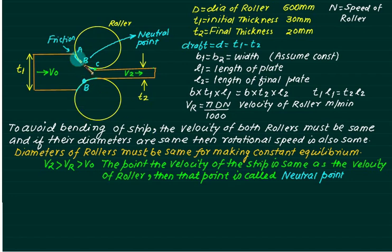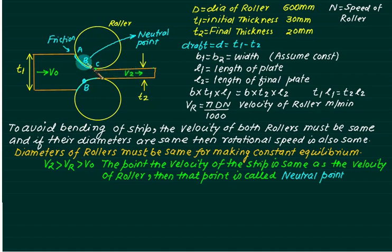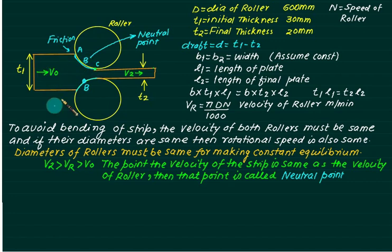From A to B: velocity at A is V0, velocity at B is Vr, and Vr is more than V0. Because of this the strip is drawn inside by friction. After the neutral point, V2 is more than Vr, so the strip is automatically dragged due to high velocity. We only need friction from A to B; once the strip enters, it automatically moves through. There is a slip from A to B, called backward slip.